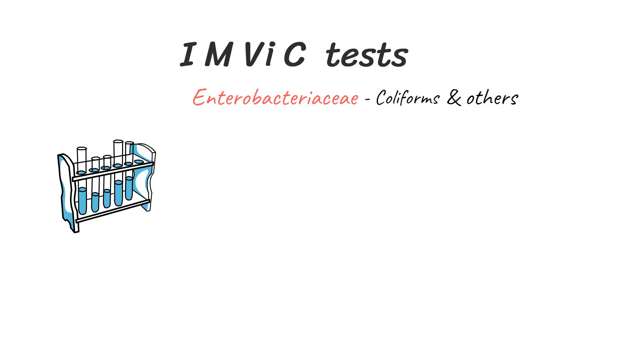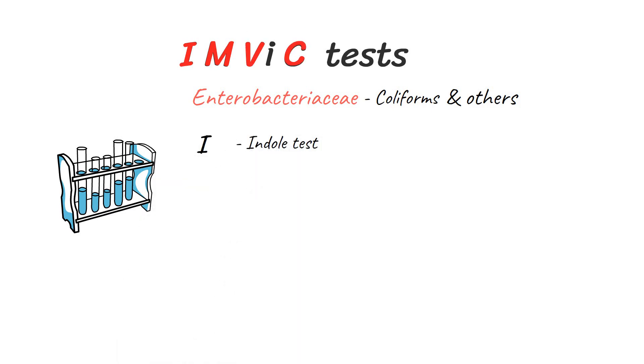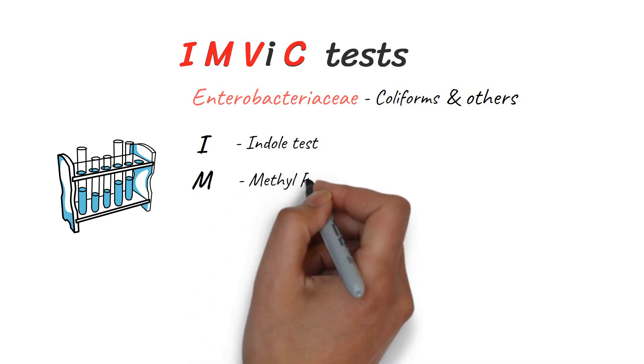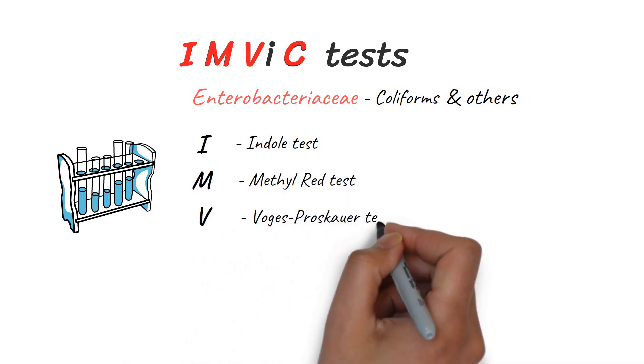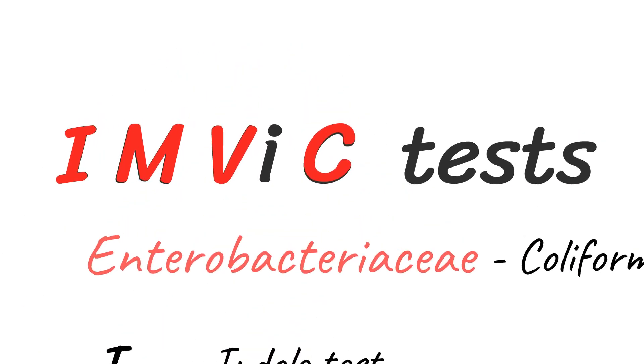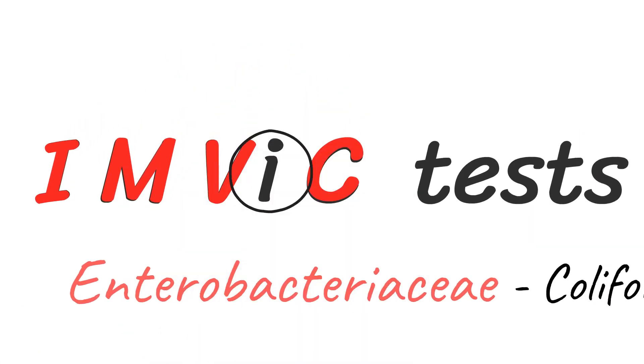The tests are named after the initials of the four tests, where I stands for indole test, M stands for methyl red test, V stands for Voges-Proskauer test, and C stands for citrate utilization test. The small i does not represent any kind of test. It is given only for the comfort of pronunciation.